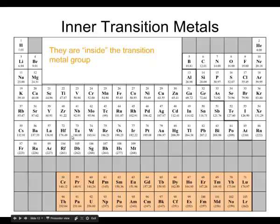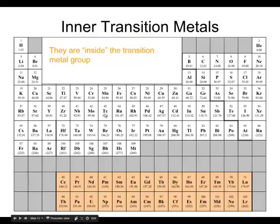Inside the transition metals, we have another group. These elements — this whole series — actually squeeze in between the periodic table right in this area, fitting into that little slot. These we call the inner transition metals because they are actually inside the other group of transition metals.